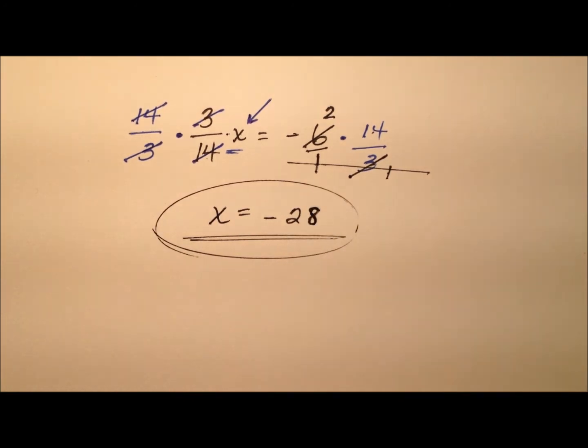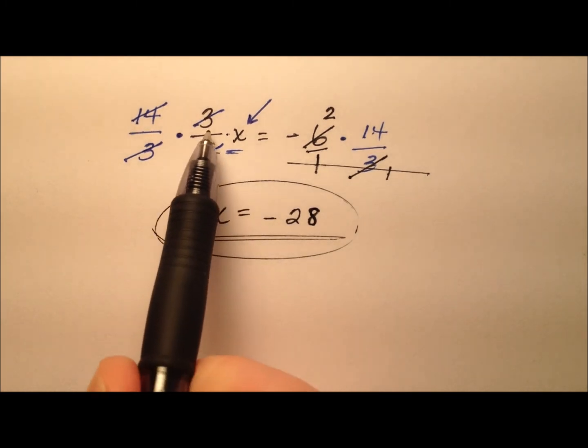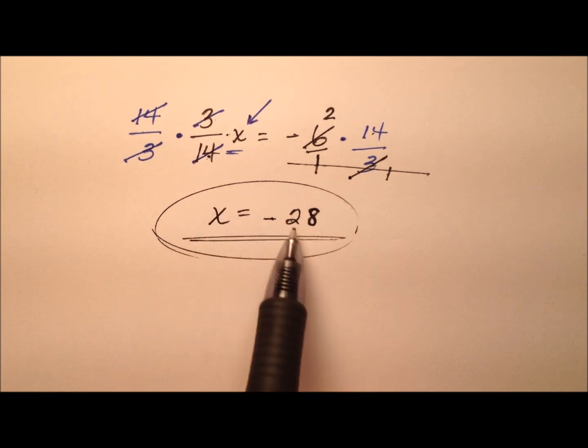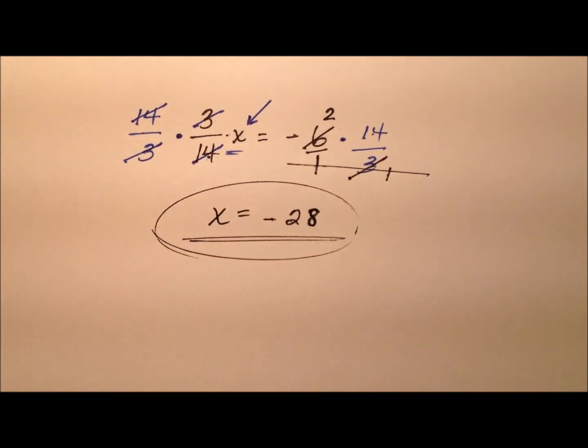So the value for x that will make this equation true is going to be negative 28. So we can see that 3/14ths of negative 28, or 3/14ths times negative 28, will indeed be this negative 6.